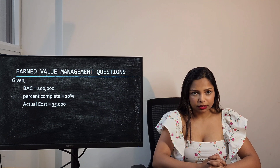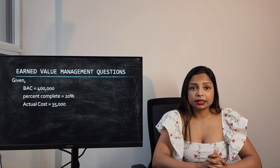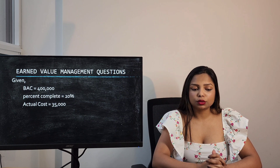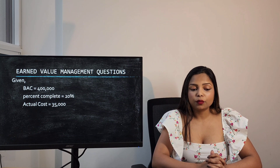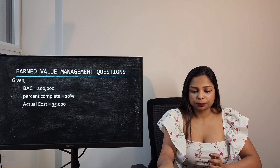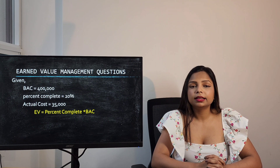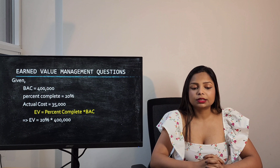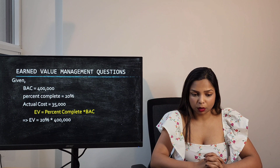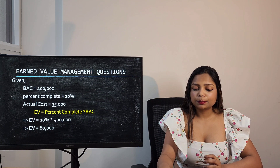In the question, Budget at Completion is $400,000, the project is 20% complete, and the Actual Cost spent is $35,000. To calculate Earned Value, the formula is percent complete multiplied by BAC. Here it's 20% multiplied by $400,000, which gives an answer of $80,000.